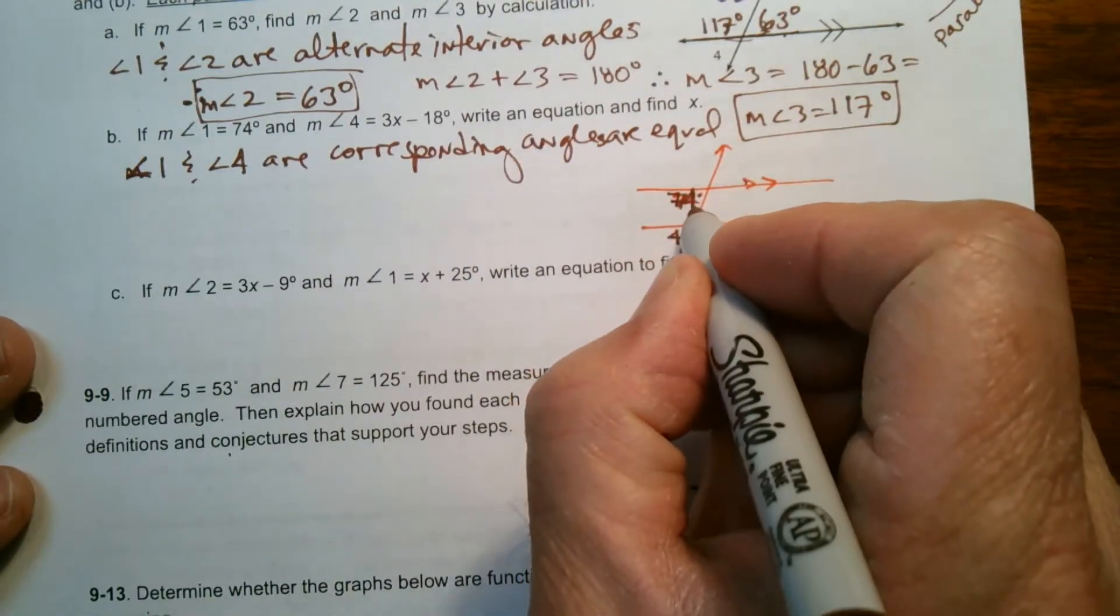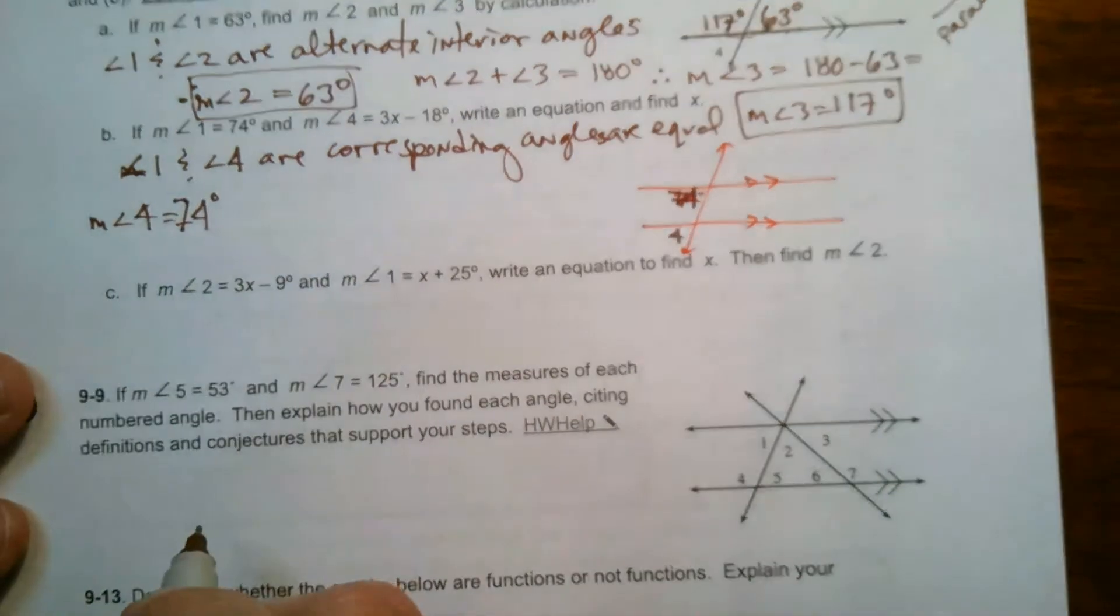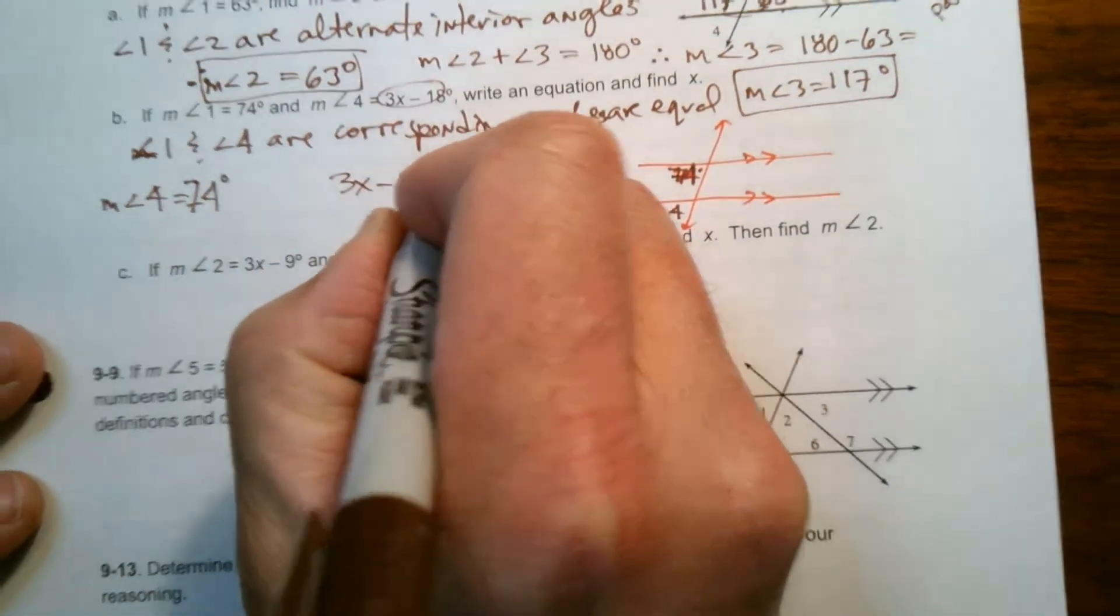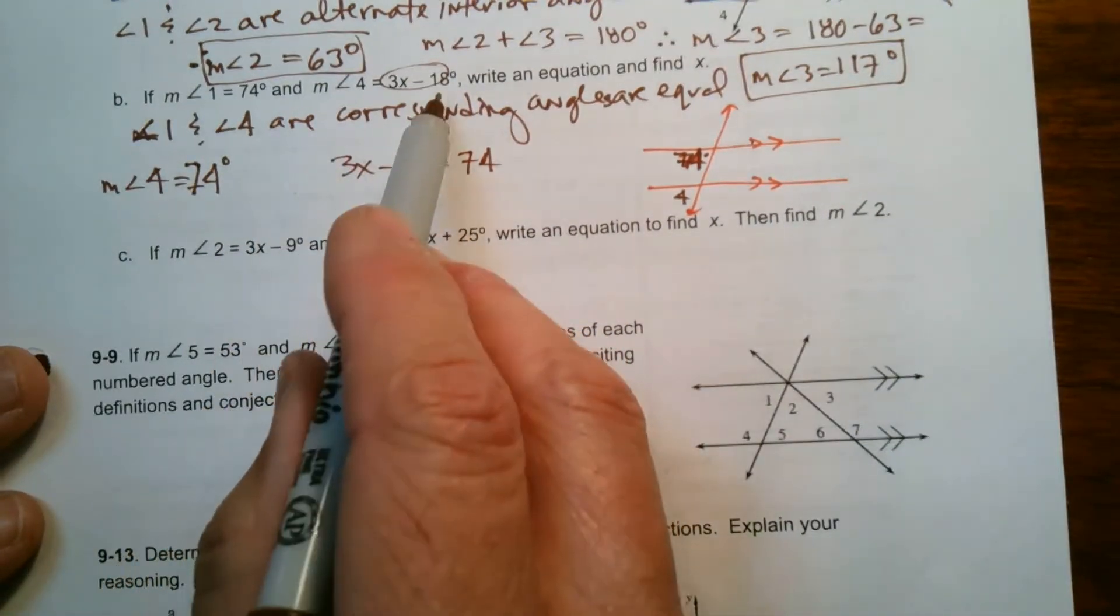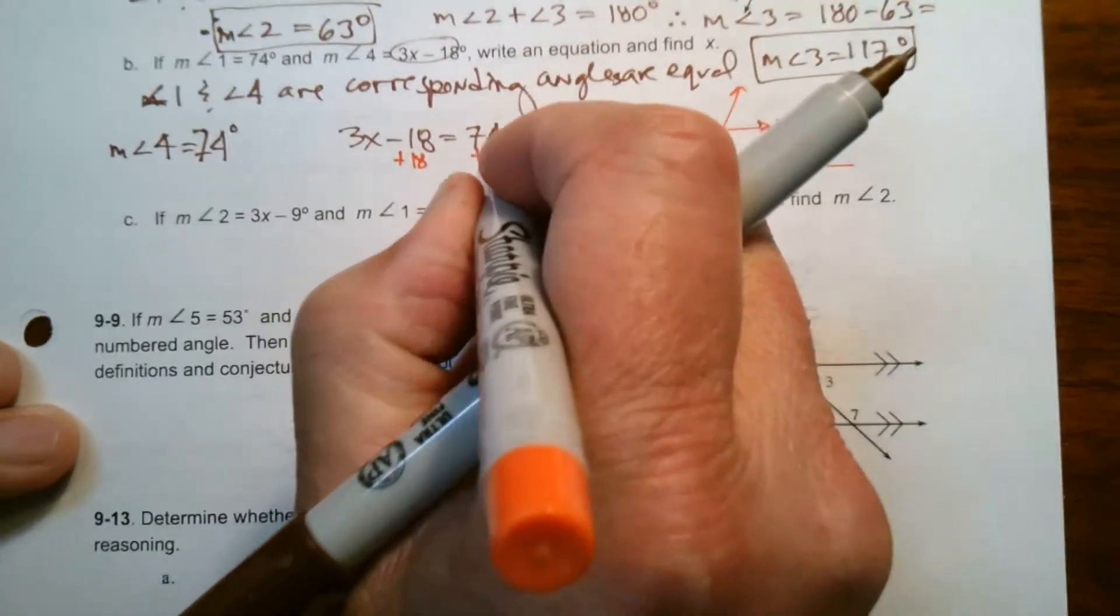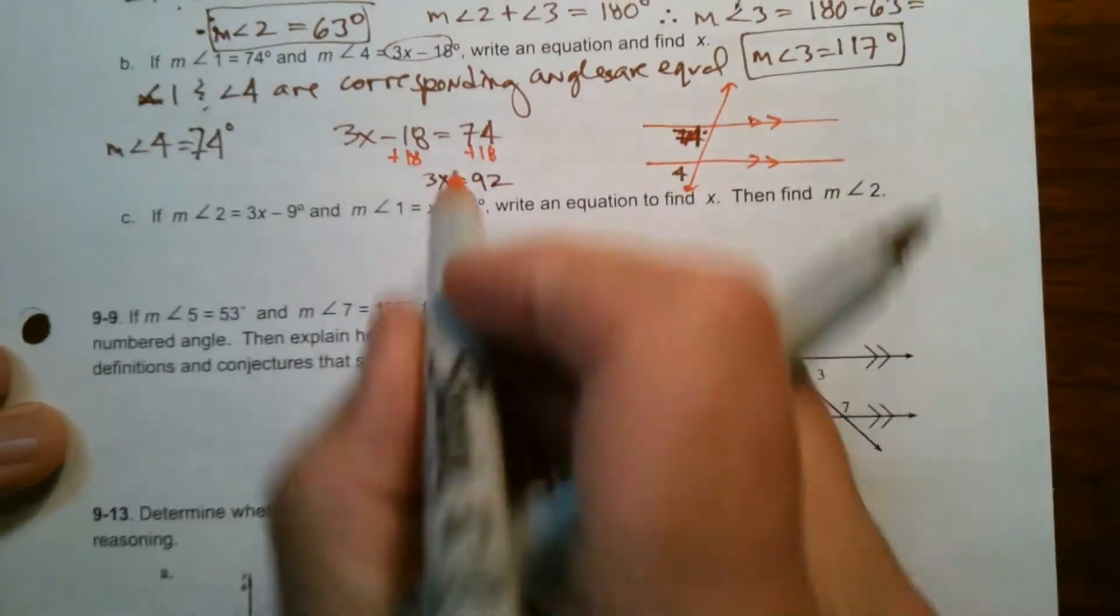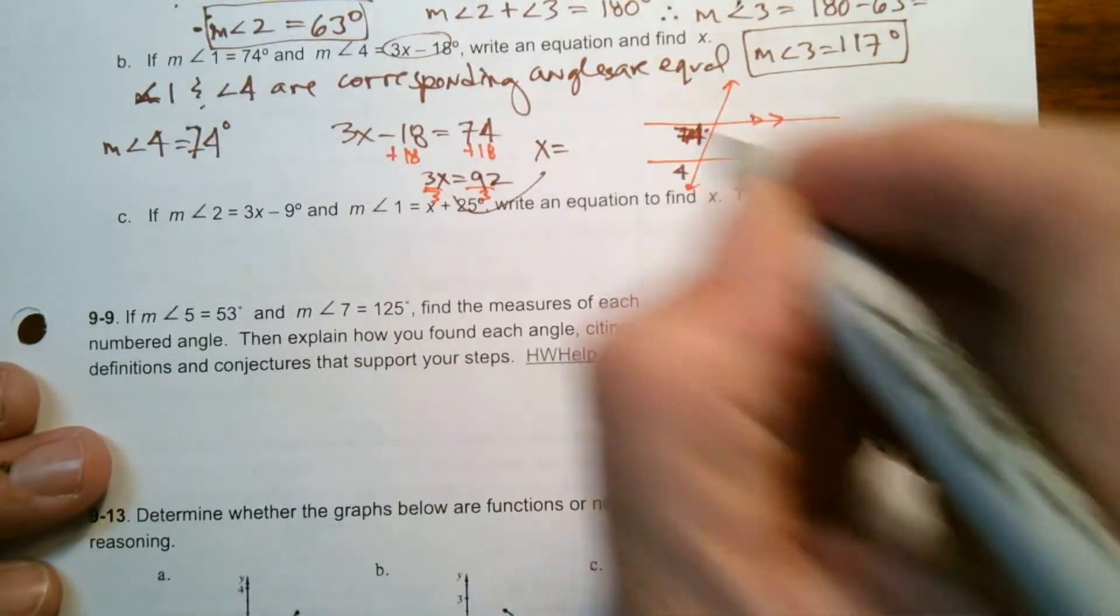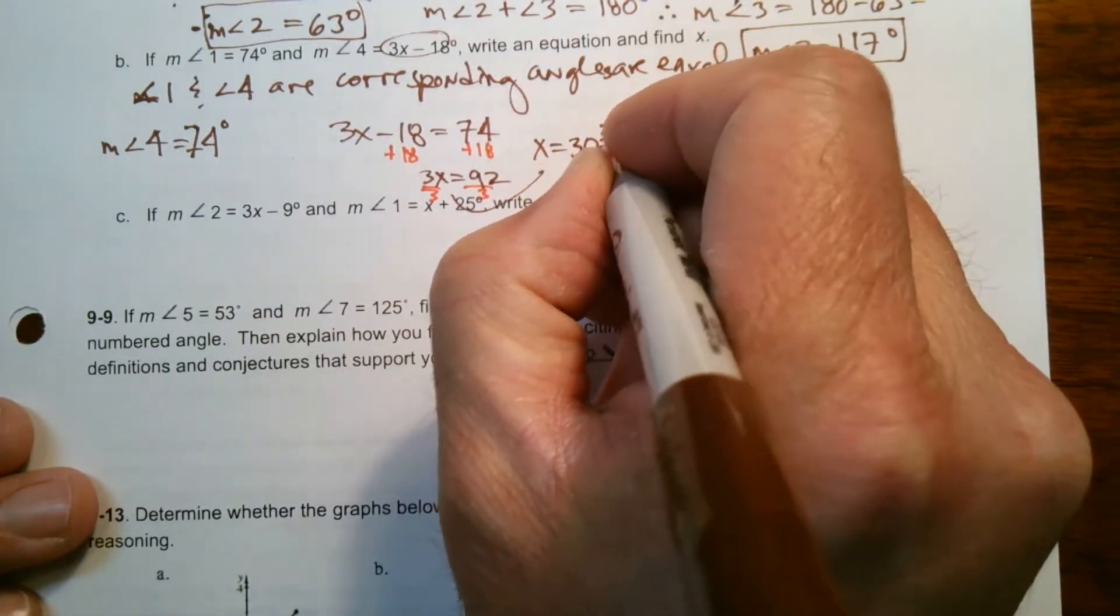So that being said, if angle 1 is 74, then the measure of angle 4 is also 74 degrees. And they also give me an expression to represent angle 4. So here's my equation. 3x minus 18 is equal to 74. So that expression for 4 is 3x minus 18, but we also know angle 4 is 74. So I can write an equation. And then I just solve for x. So add 18 to both sides. So I get 3x is equal to 92. And then divide both sides by 3. So what I end up with is x is equal to 30 and two thirds.